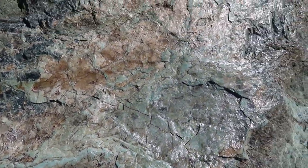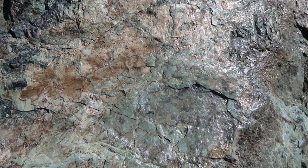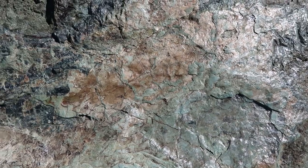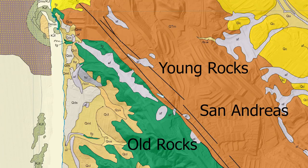Behind me are rocks of the Merced Formation, which are really recent — from the Pleistocene, so less than 2 million years old. The other side of the fault on the Pacific Plate has greenstone of the Franciscan Complex, which is millions of years older. They wouldn't be next to each other if it weren't for the fault. This is the closest the San Andreas Fault gets to San Francisco.